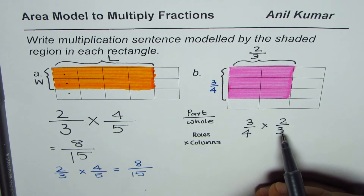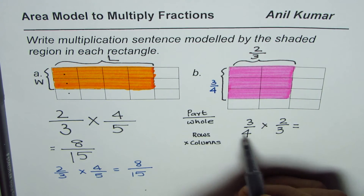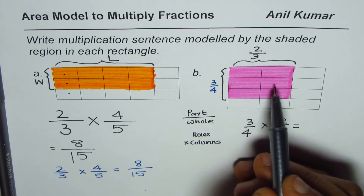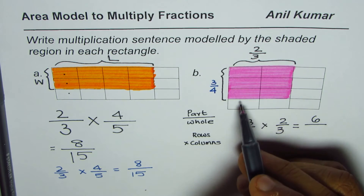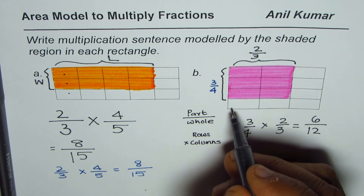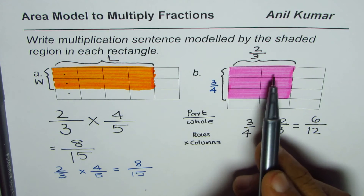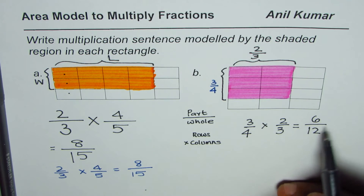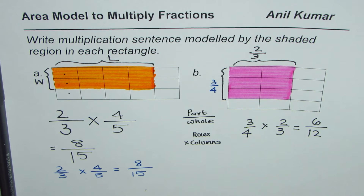Area is the product of length and width, so we get 3/4 times 2/3. Now to write the multiplication sentence we find the product: counting the shaded rectangles — 1, 2, 3, 4, 5, 6 — six rectangles are shaded out of a total of 3 times 4, which is 12. So we get 6 out of 12. You can multiply total rows by total columns for the denominator, or count all the rectangles.